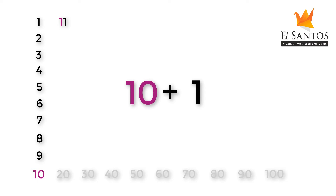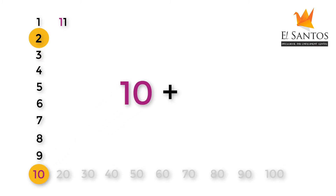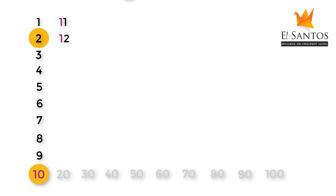12 is made from 10 and 2. 2 kicks out 0 and sits in its place to form 12. 10 and 2 makes 12.